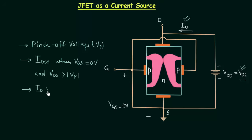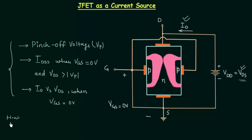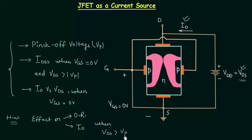We obtained the ID versus VDS plot when VGS was equal to 0V. Those were the three topics from the last lecture. I also gave a homework problem asking about the effect on the depletion region and the effect on drain current ID when VDS is increased beyond the pinch-off voltage VP. I received some answers in the comment section, and in this presentation we will discuss this problem. Once you understand the solution, you will also know how to use a JFET as a current source.